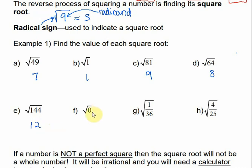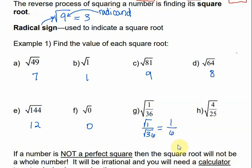We didn't talk about this, but what's the square root of 0? It does have a square root. The square root of 0 would be 0, because 0 times 0 is 0. Now, if we have a fraction, as long as the whole fraction is under the radical, it's like we're taking the square root of each part of the fraction. So the square root of 1 is 1 and the square root of 36 is 6. The same thing with the next fraction — the square root of 4 is 2, and the square root of 25 is 5.